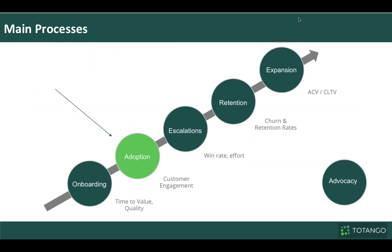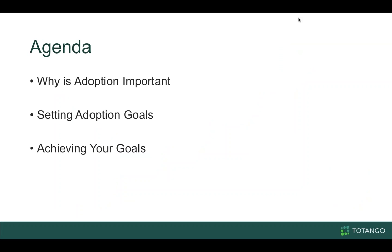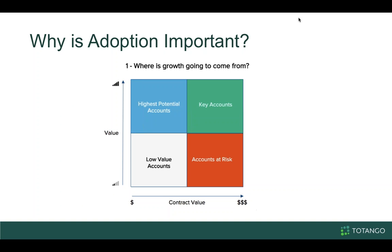Today, as we look across the customer journey, we're going to really be focusing on that adoption phase. We've gotten past onboarding, we've got them up and ready to go, and now we need to make sure they're adopting the product. It's not just right after onboarding — it's something we're going to continue throughout their cycle as they start to adopt new features and new functionality. Our agenda today: we're going to understand why adoption is important, setting adoption goals, and then how to achieve those goals.